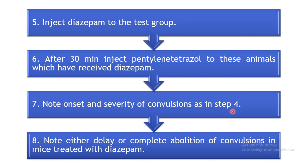Find out the time after which convulsions are induced in each of the six test group animals, and note the nature of the convulsions produced. Compare both groups and note either the delay or complete abolition of convulsions in the mice treated with diazepam. If there is a delay in onset or complete abolition — meaning the animal shows no convulsions at all — this indicates that the test drug has anticonvulsant property.